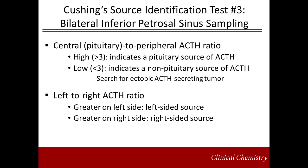Interpreting BIPSS results looks at the ratio between the central pituitary results and the peripheral ACTH ratio. If the pituitary values are at least three-fold or higher than the peripheral ACTH, then the pituitary is considered the source of ACTH. Conversely, if the ACTH is relatively higher in the peripheral samples, this suggests an ectopic tumor source of ACTH, which should prompt an imaging-based search for the tumor. If the pituitary is the source of ACTH elevation, the pituitary tumor may be further localized to the left or right side of the pituitary if one petrosal sinus has an ACTH concentration 1.4 times higher than the other. This information can be particularly helpful to supplement inconclusive imaging studies.